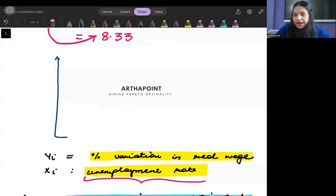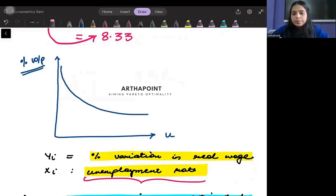And clearly isn't that the definition of the Phillips curve. So if I take percentage change in the real wage here and if I take unemployment rate here, then I know that there is an inverse relationship between the two.